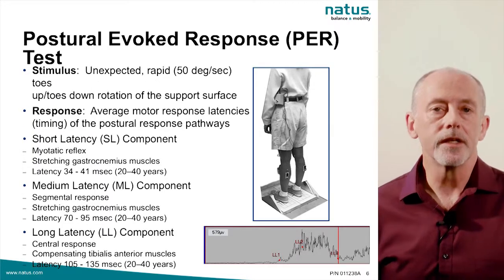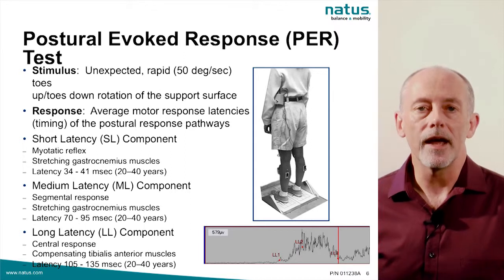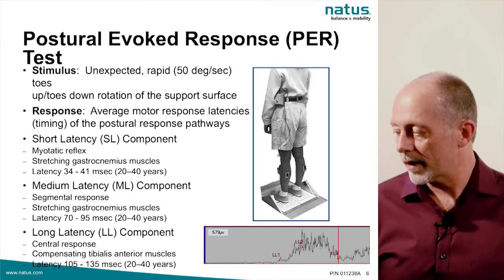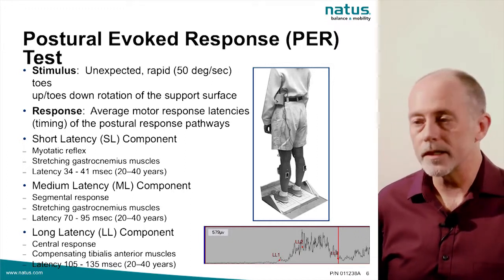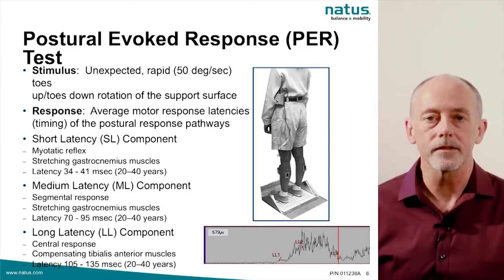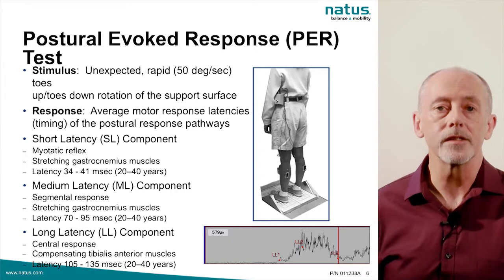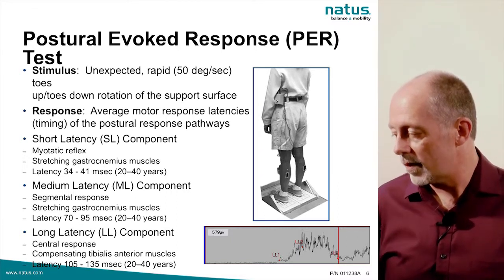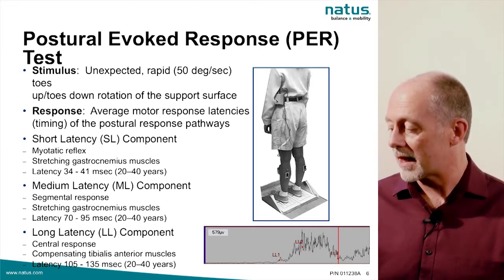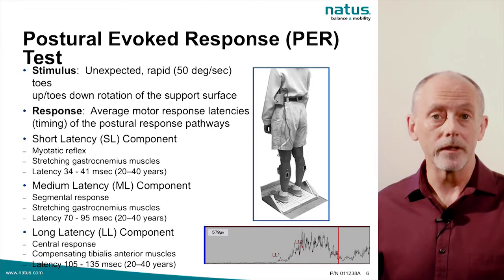Our stimulus is rapid toes-up tilts. Our response is these averaged reflex response latencies and amplitudes. When we record from gastroc and tibialis, we're looking at three responses: the short latency response is our myotonic stretch reflex, the medium latency response from the gastroc is our segmental response, and the long latency component from the tibialis is the actual postural control response that puts us back into a stable position. They all have a range of norms for latency and amplitude.